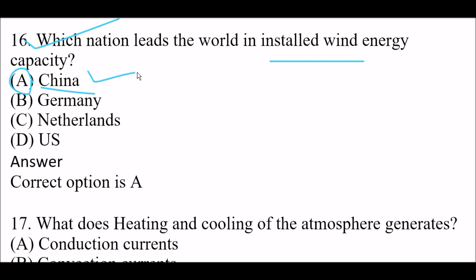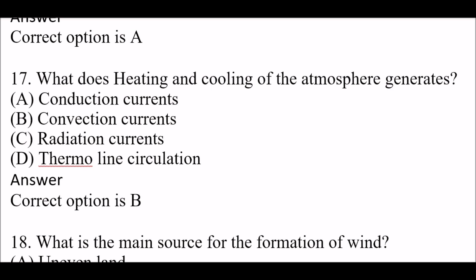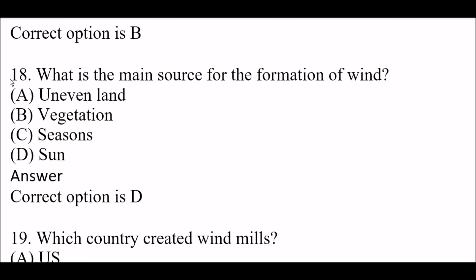Next question: what does heating and cooling of the atmosphere generate? Option A: conduction currents. Option B: convection currents. Option C: radiation currents. Option D: thermal line circulation. Right answer is Option B — convection currents. Next question: what is the main source for the formation of wind? Option A: uneven land. Option B: vegetation. Option C: seasons. Option D: sun. Right answer is Option D — the sun is the main source for the formation of wind.